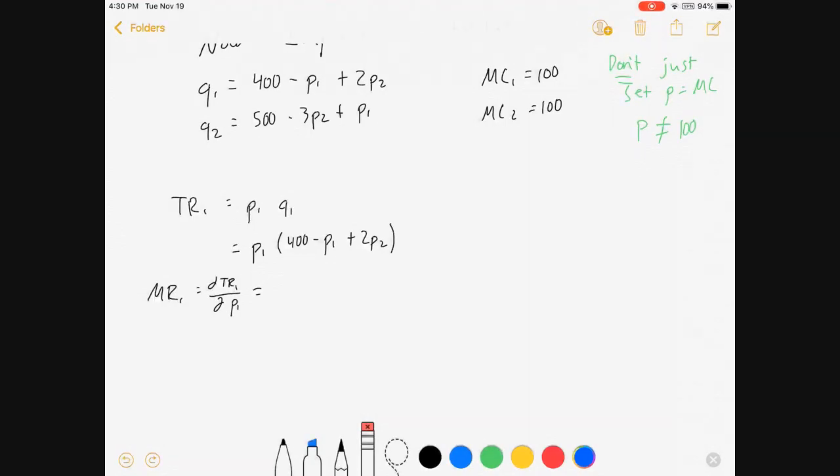is that we are going to be changing prices instead of changing quantities. In Cournot, we choose quantities. In Bertrand, we choose prices. So keep that in mind.